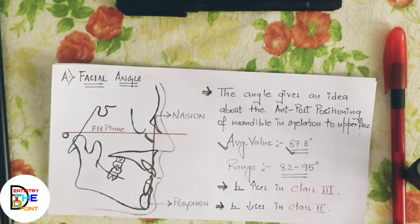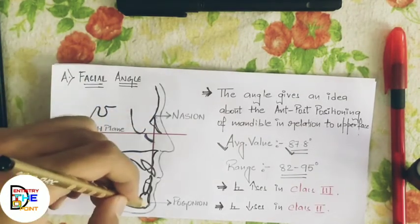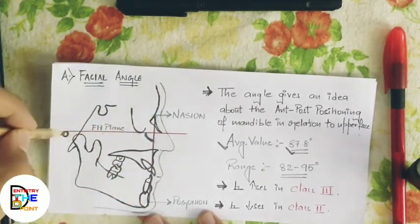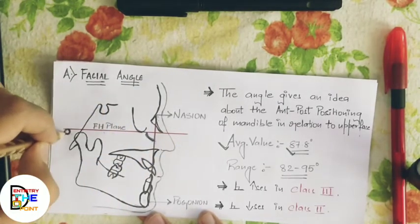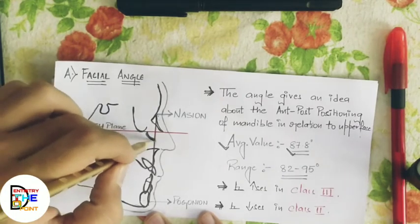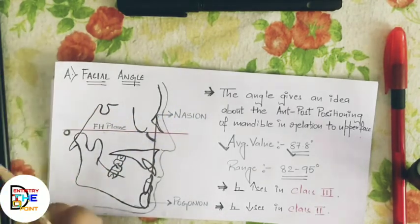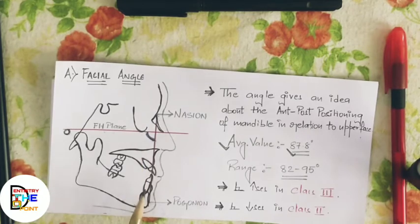Starting with the first skeletal parameter — the facial angle. The facial angle is formed between two lines: the first line is from nasion to pogonion (the N-Pog line), and the second line is the Frankfurt horizontal plane. The angle formed between these two lines is called the facial angle. This angle gives an idea about the anterior-posterior positioning of the mandible.